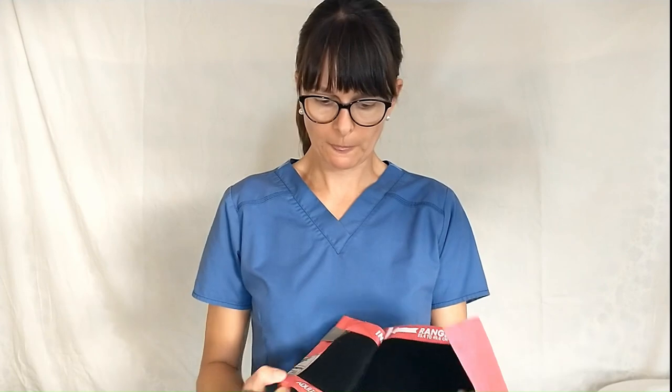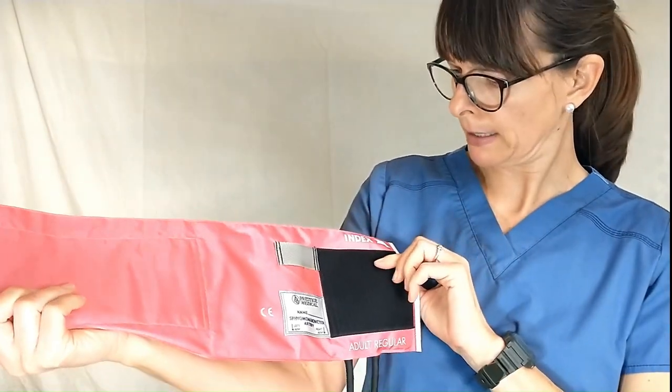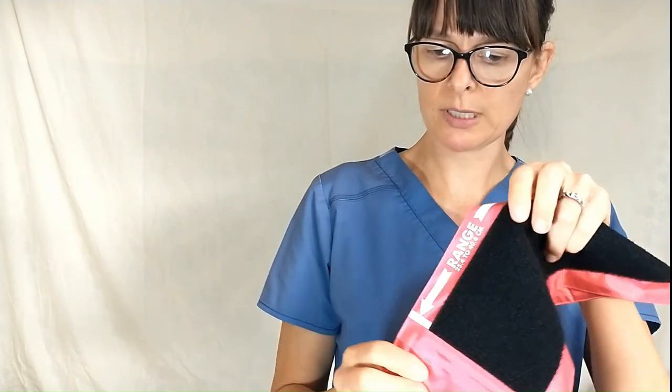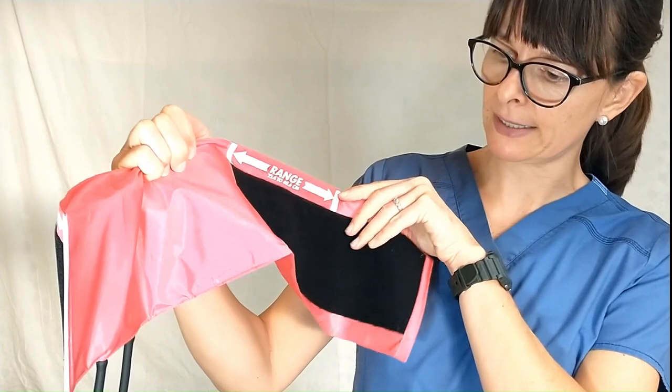Now if we take a look at this blood pressure cuff, it'll tell us over here that it's an adult regular size, and then over here it also has the range in centimeters, which in this particular case is 25.4 to 40.6 centimeters.